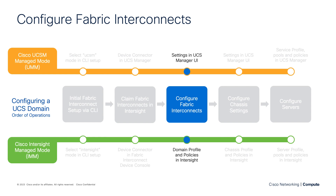Next, we need to configure our fabric interconnects. In the initial setup we configured our management IP address settings, but here we're talking about configuring things like uplink and server ports, creating port channels, enabling breakout ports, and more. In a UMM domain, this involves a series of settings within the UCS Manager UI, with no policies governing this configuration. Alternatively, with an IMM domain in Intersight, we now have a domain profile and a set of associated domain profile policies which govern this fabric interconnect configuration. A domain profile is mandatory for configuring an IMM domain.